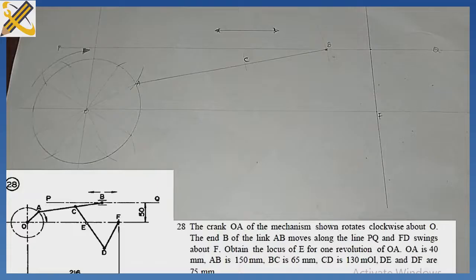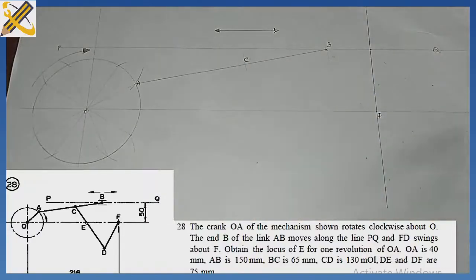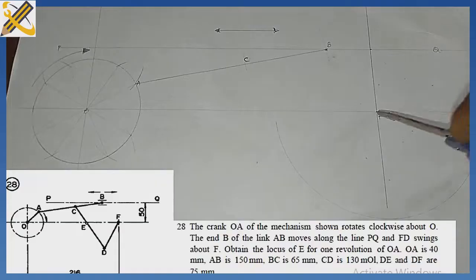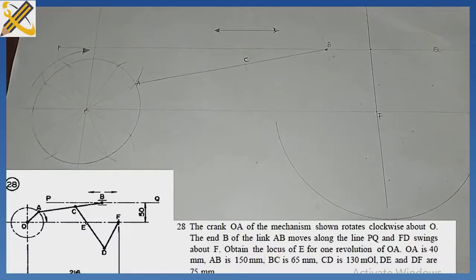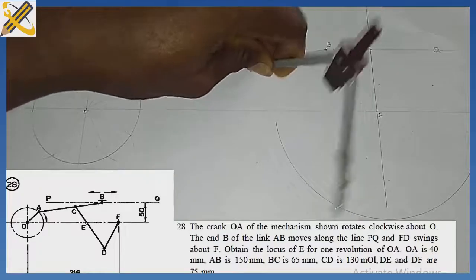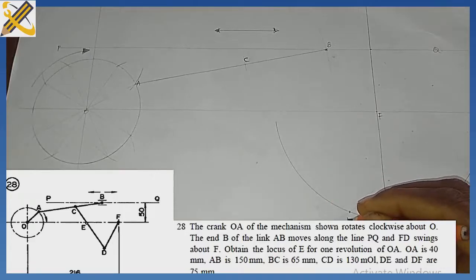Remember, we are told that FD swings about point F — there is a pivot here. So FD swings initially like this. Pick your compass; the length FD is 75. With length 75, place your compass on point F and draw an arc. We are told the distance between point C and D is 130. With your compass measuring 130, place it on point C and strike an arc. Wherever that arc touches the FD arc is our point D.